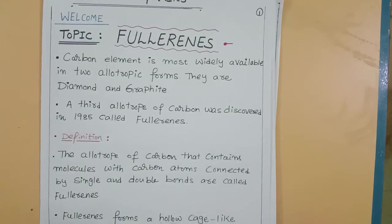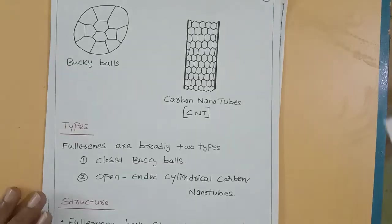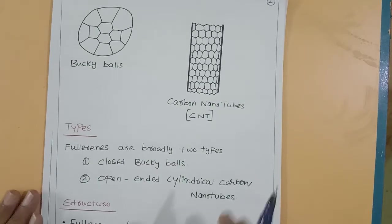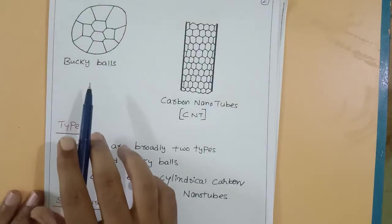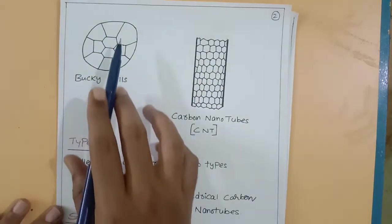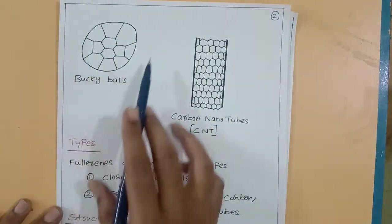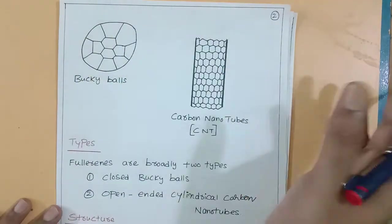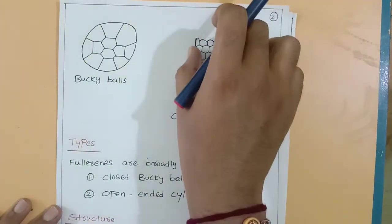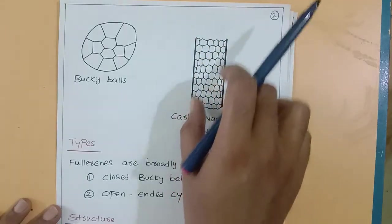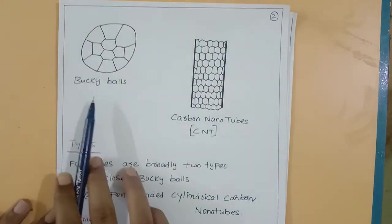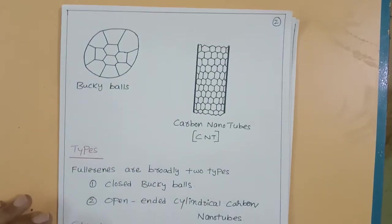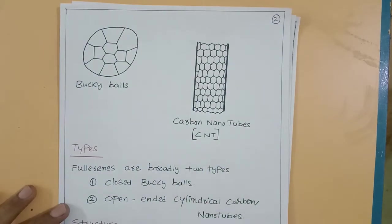Now we have two diagrams. For example, spherical fullerene is round shape, and fullerene is also in tubular and cylindrical form. Round shape, for example, is Bucky ball. Cylindrical form, for example, is carbon nanotubes.